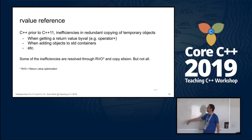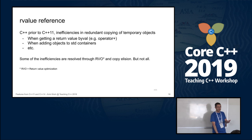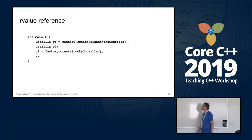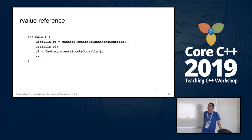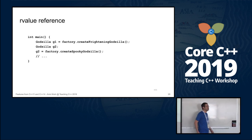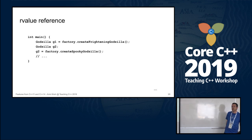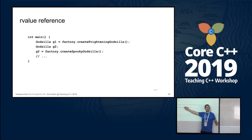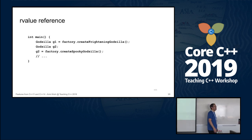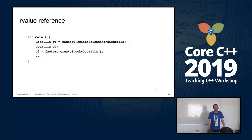I understand the rationale behind rvalue references: to identify, with the compiler's help, that we have a reference to an object that is about to die. Suppose we have a factory that creates a frightening Godzilla — a local object returned by value. I know it's going to be dead at the end of the statement because it's a temporary. I prefer to 'steal' it, since it's about to die — please give me your assets, you don't need them. This is what we want to do, and it might be more efficient.